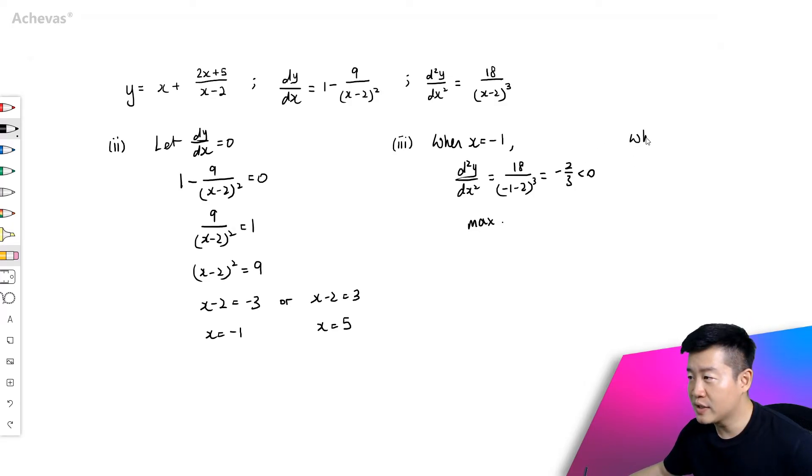And let's do the same test for the other point, that is when x is equal to 5. So d square y dx square, it is 18 over 5 minus 2 to the power of 3, and this is equal to 2 over 3. This is bigger than 0, so we are talking about a minimum point.